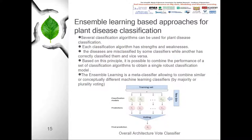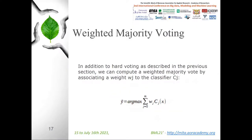Several classification algorithms can be used for plant disease classification, and each has strengths and weaknesses. It is often noticed that diseases are misclassified by some classifiers while others correctly classify them and vice versa. Based on this principle, it is possible to combine the performance of a set of classification algorithms to obtain a single robust classification model. Ensemble learning is a meta-classifier allowing to combine similar or conceptually different machine learning classifiers by majority or weighted voting. Ensemble learning is often used in professional applications and has helped to win several competitions. Several ensemble learning techniques can be used: hard voting, weighted majority voting, and soft voting.